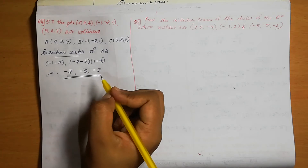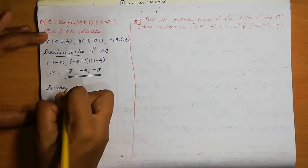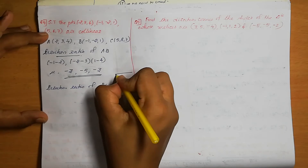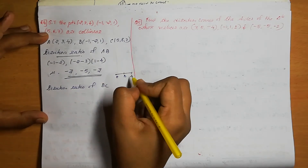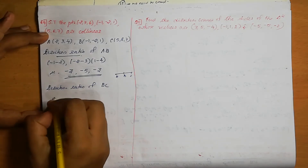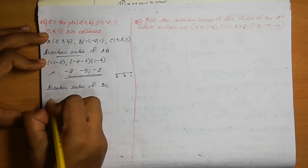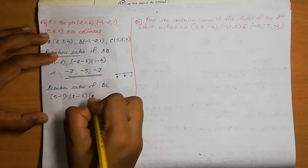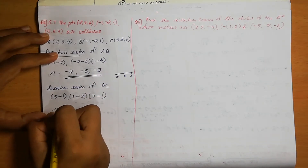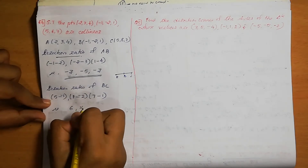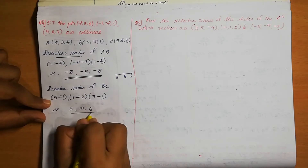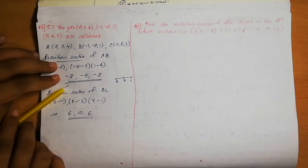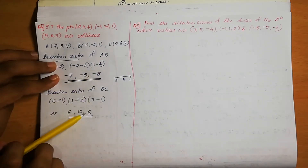Next we can find the direction ratio of line BC. BC means 5 minus minus 1, 8 minus minus 2, 7 minus 1. That gives us 6, 10, 6. If we multiply the AB ratios by minus 2, we get minus 3 times minus 2 is 6, minus 5 times minus 2 is 10, minus 3 times minus 2 is 6.